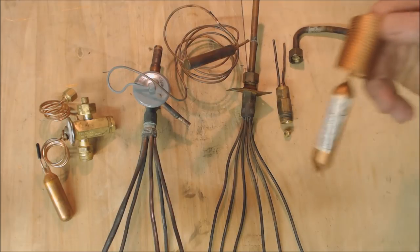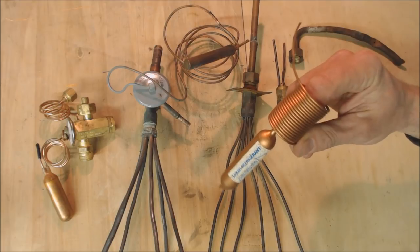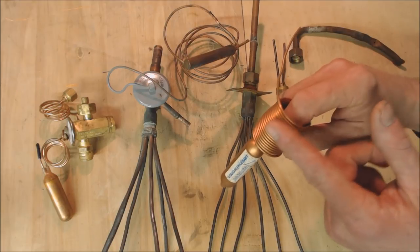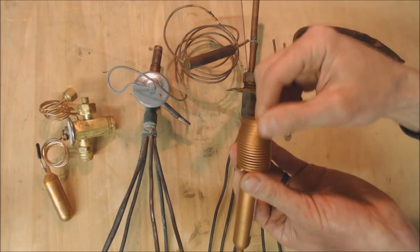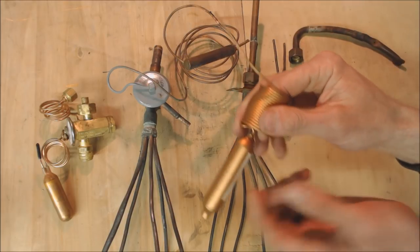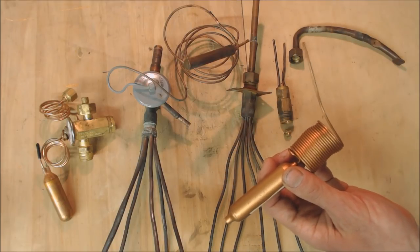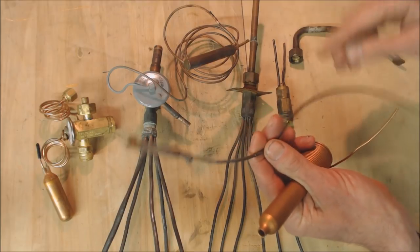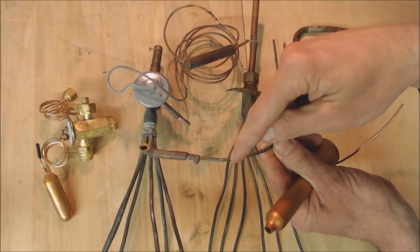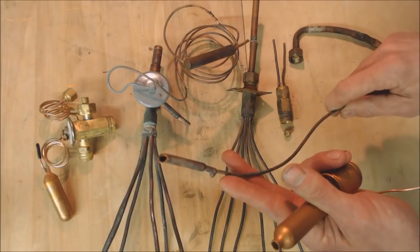This also falls in the category of a fixed orifice, and this is capillary tube. This has a set inside diameter and also a set length by the manufacturer. You may or may not see a strainer on it. It may just come right from the tube into the capillary tube and then right back out the other side into another line.